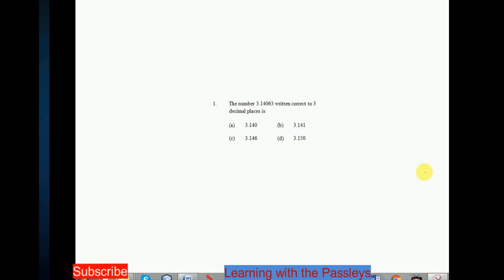The first one, the number 3.14063 written correct to three decimal places is. So we have A, B, C and D to choose. What we are going to do here, let me rewrite the problem. So 3.14063. They say that they want three decimal places. So I'm going to just draw a line right here.